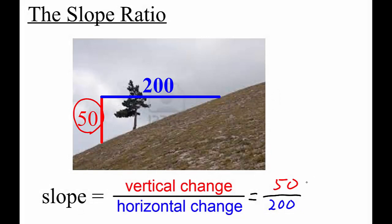We simplify it by dividing the top and bottom by 50 and we get 1 over 4 or 1 fourth. The slope tells us that the line only goes up 1 foot for every 4 feet it goes to the side.